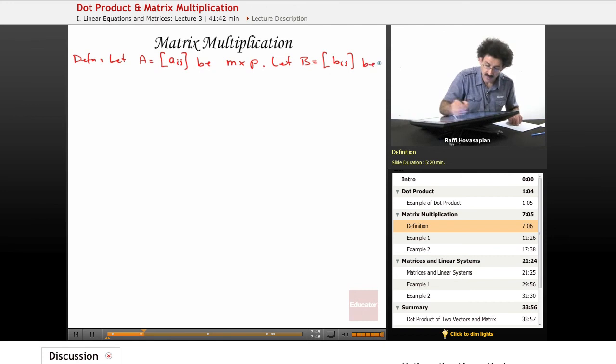Let B be the ijth B, P by N. So A is M by P, B is P by N. Notice that the number of columns of the matrix A equal to the number of rows of matrix B. That's going to be very important.